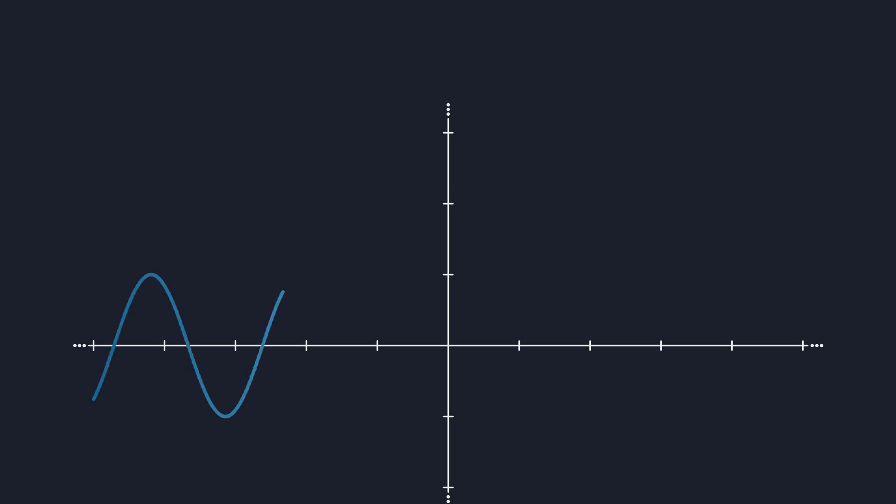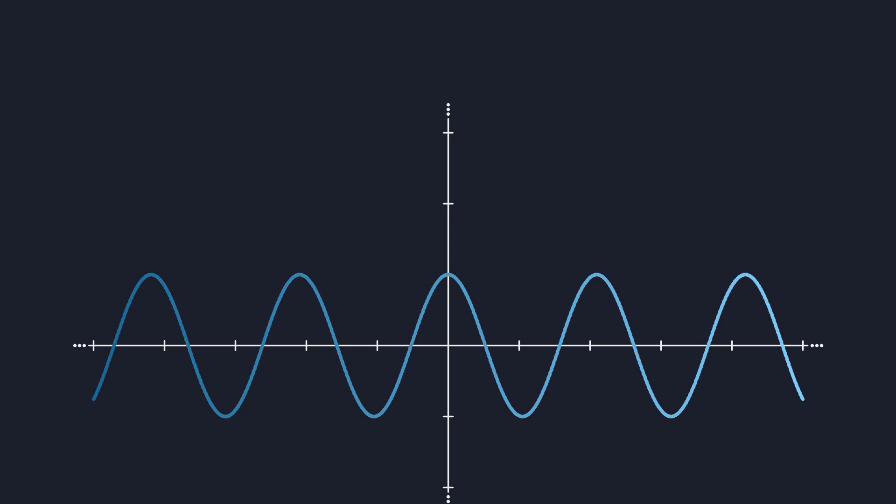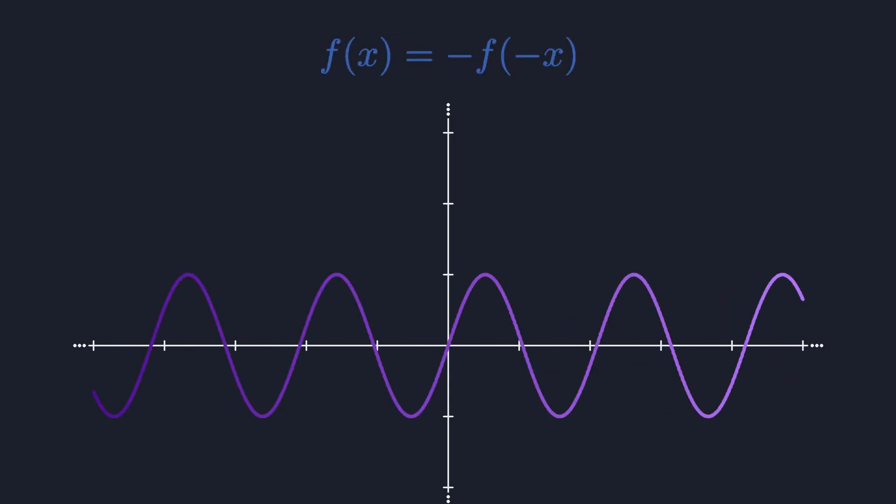It's easy to check whether a function is symmetric or not. When you start at x equals 0 and you walk to the right, you encounter exactly the same values as when you walk to the left. So the function value at any given x is the same as the value at negative x. For an anti-symmetric function, the value picks up a minus sign.